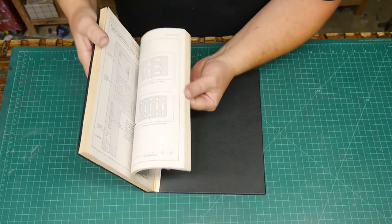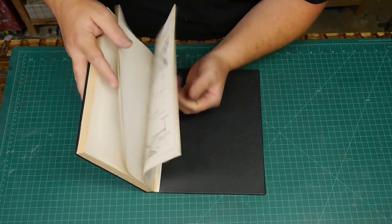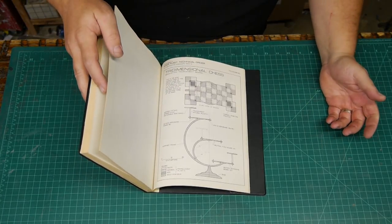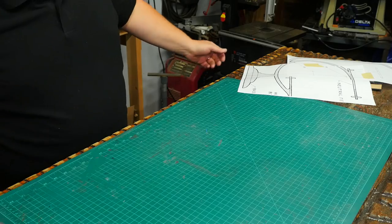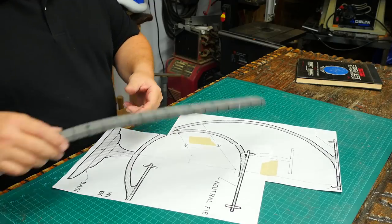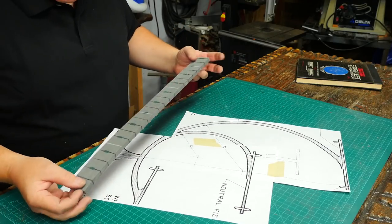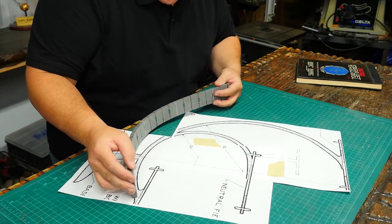I'm going to use the very first Star Trek technical manual. This is the 1975 Franz Josef manual and it has one of the best drawings of the tridimensional chess set near the back. I enlarged the artwork so the squares would be two and a quarter inches, which is tournament size for chess. It may end up being a little big, but you know, what the hell?